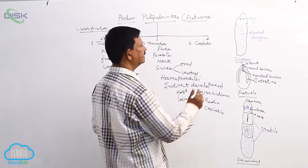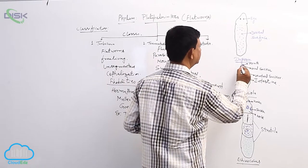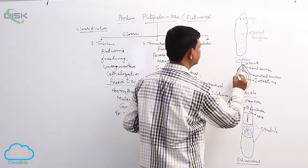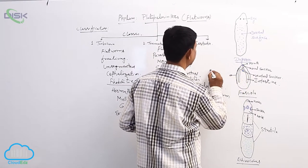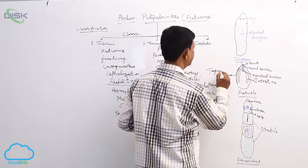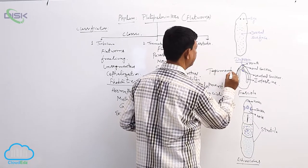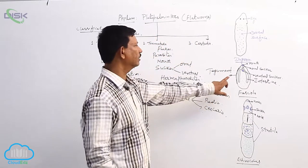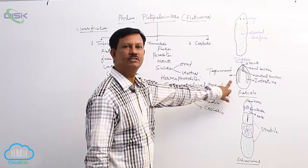Its body is externally covered by a tough cuticle which is known as the tegument. It gives protection to the organism or it gives protection to the parasite.